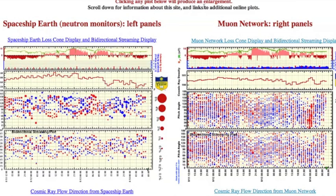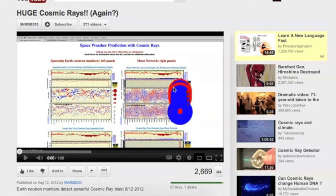Cosmic ray charts look normal now. Luckily, Mr. MBB333 caught what they took down. This is from two days ago, and it's tough to say this is data error anymore.